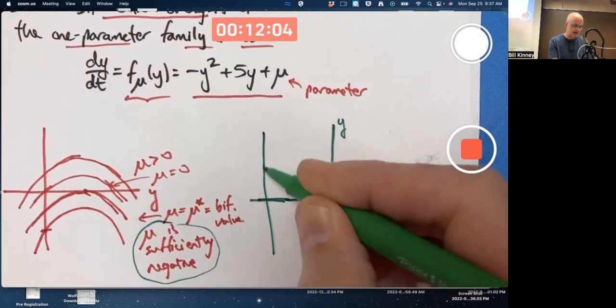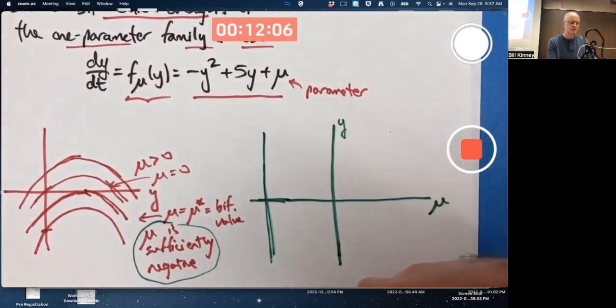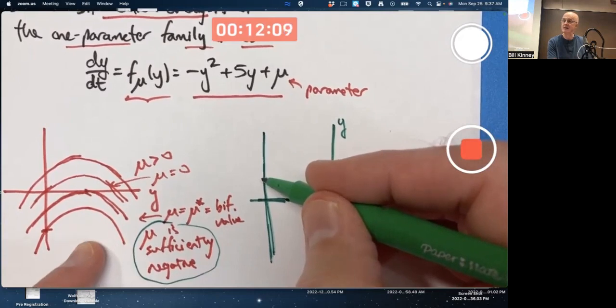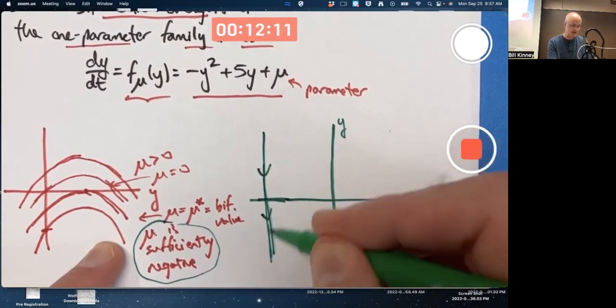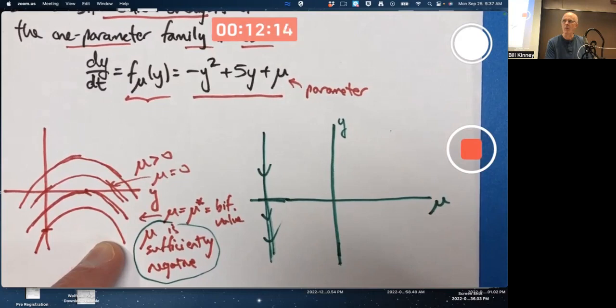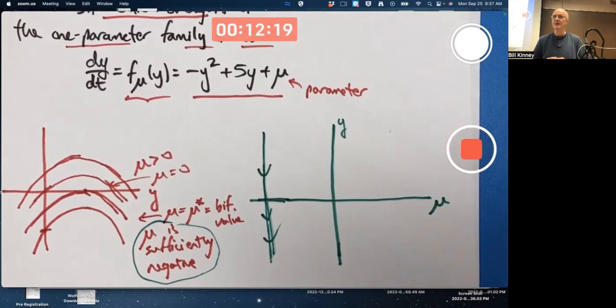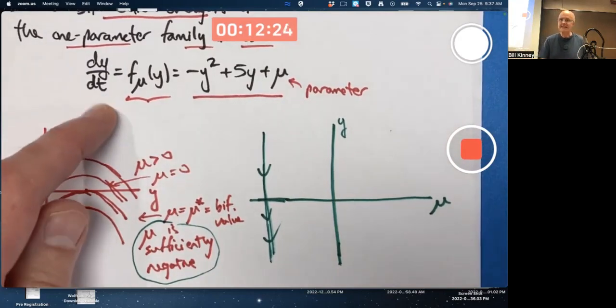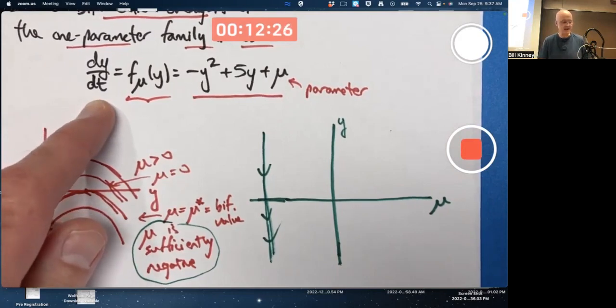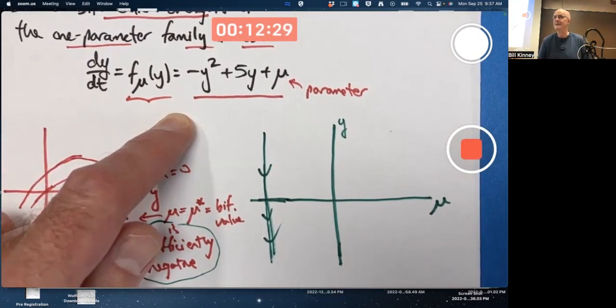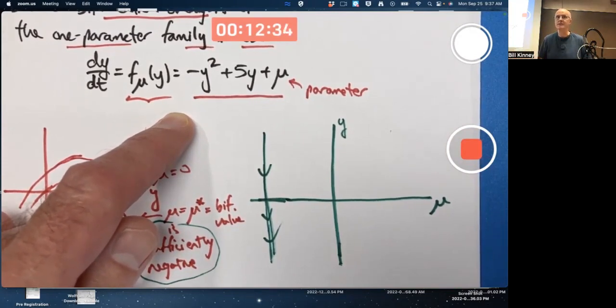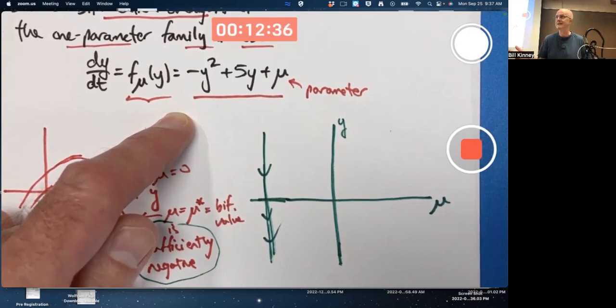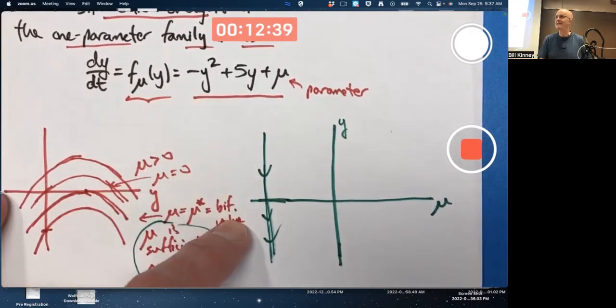If mu is sufficiently negative, if we're in this case, then the phase line is going to be just a bunch of arrows pointing down because the value of f is negative. Why does that mean we make arrows pointing down? Because it means if we drew a slope field and solutions in a slope field, dy/dt for those solutions would be negative, no matter what y is. Solutions would have negative slopes, no matter what spot you're in in the slope field. They'd be decreasing.